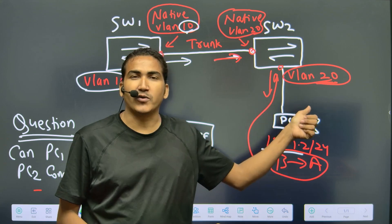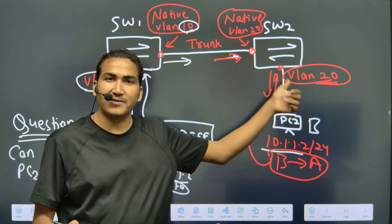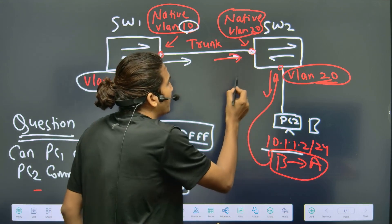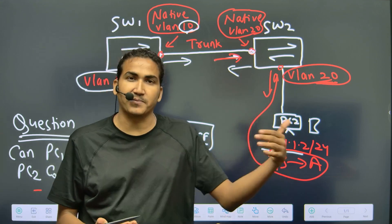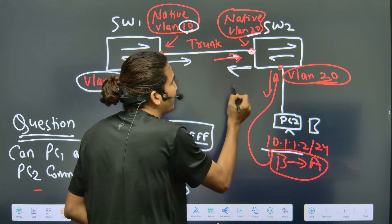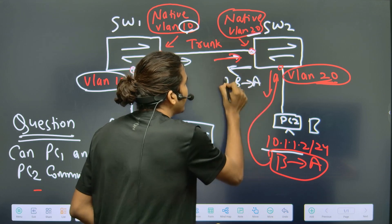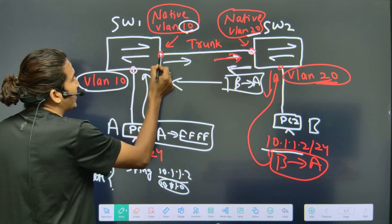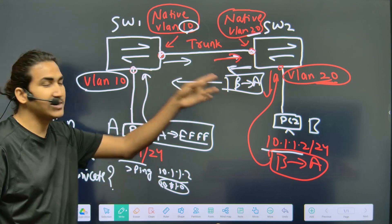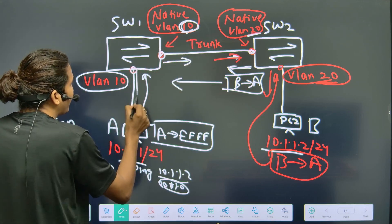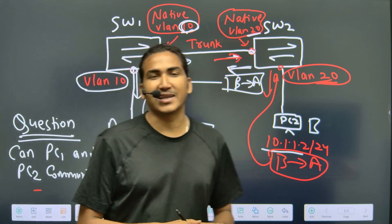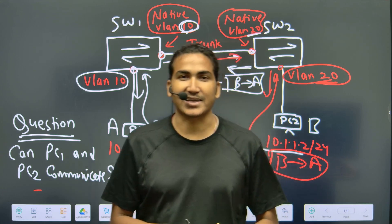Switch 2 receives the ARP reply on its VLAN 20 interface, and forwards it out the trunk link. Since the native VLAN on Switch 2 is VLAN 20, it again sends the frame untagged. Switch 1 receives untagged traffic on its trunk link and treats it as native VLAN traffic — which is VLAN 10 — and forwards it to PC1. This way, both PCs can communicate.